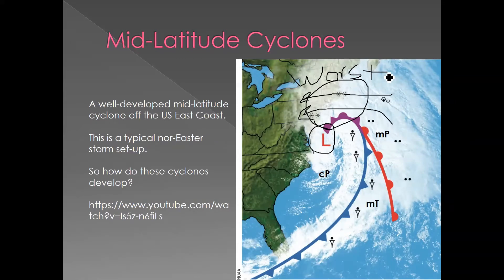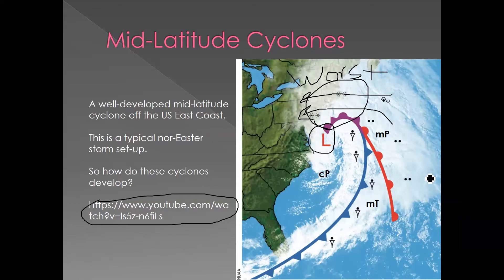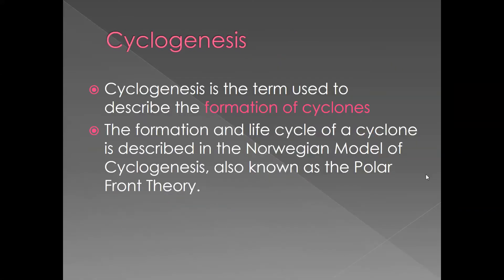So how do these cyclones develop? They form via a process called cyclogenesis, the term we use to describe the formation of cyclones. 'Cyclo' means cyclone, and 'genesis' means beginning — whether you know it from a famous book or from a video game console like the Sega Genesis. Meteorologists usually follow what's called the Norwegian model of cyclogenesis, also called the polar front theory.